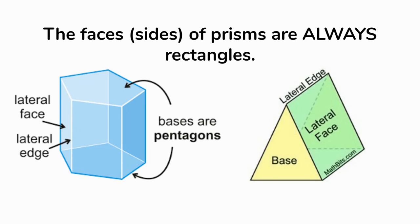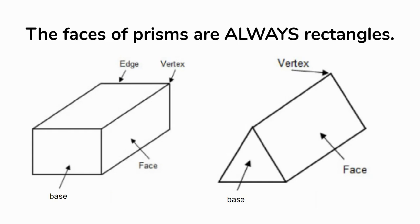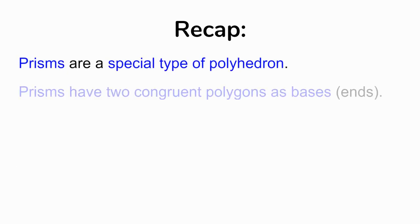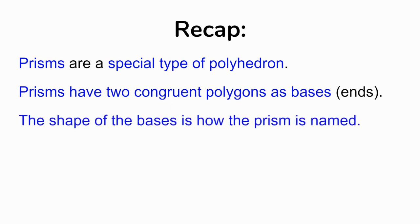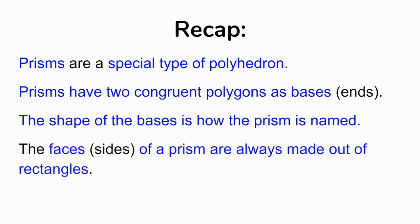On the left, we have a pentagonal prism. The bases are polygons, but the faces — the sides — are all made out of rectangles. And in the triangular prism, the two bases are congruent triangles, but the sides are also made out of rectangles. No matter what shape the base is, the sides will always end up being rectangles. To recap prisms: prisms are a special type of polyhedron with two congruent polygons as bases — think of the ends. The shape of the bases names the prism, and the faces or sides of a prism are always made out of rectangles.